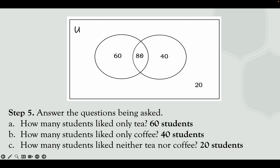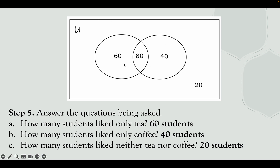For example, 80 students liked both tea and coffee, so you input 80 in the intersection. Then, to find students who like tea only, you subtract the given number of students who like tea from the students who like both tea and coffee. Same with finding students who like coffee only — subtract 120 minus 80. To check, verify that the total number of students equals the given number who were randomly selected.